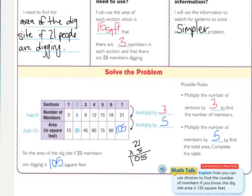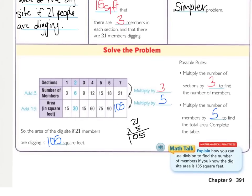Just to get you thinking — if the total area had been 135 in this math talk area, how could you have used division to find the number of members? You just look at the numbers this way: from 15 to 3, you would divide by 5. So you just do the opposite — for division, you would end up dividing by 5.